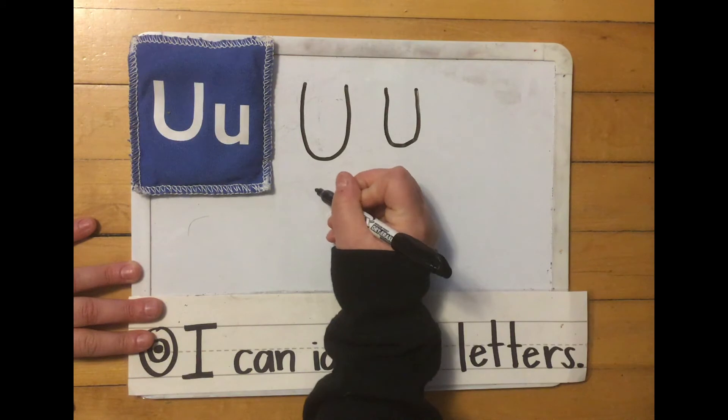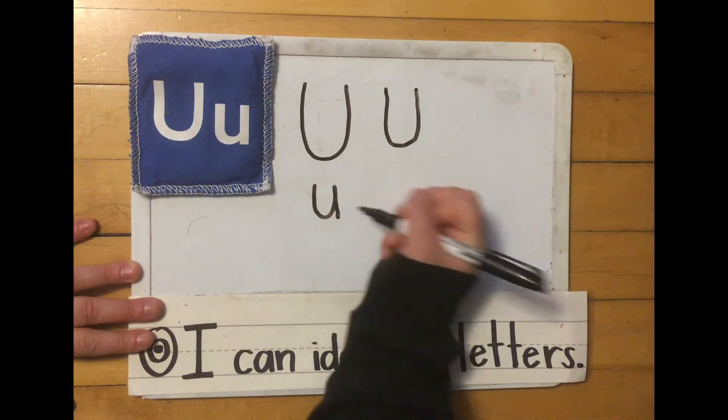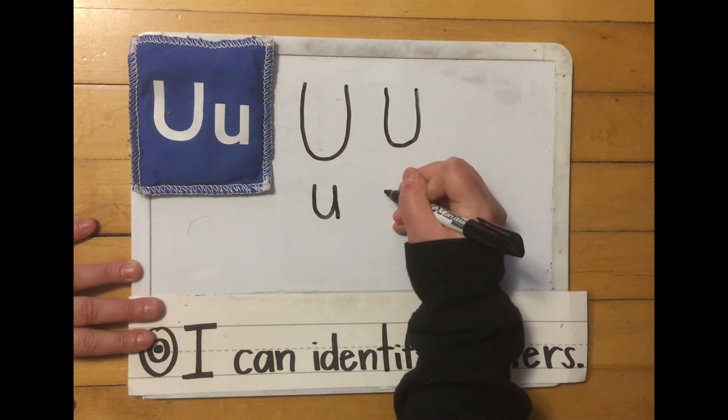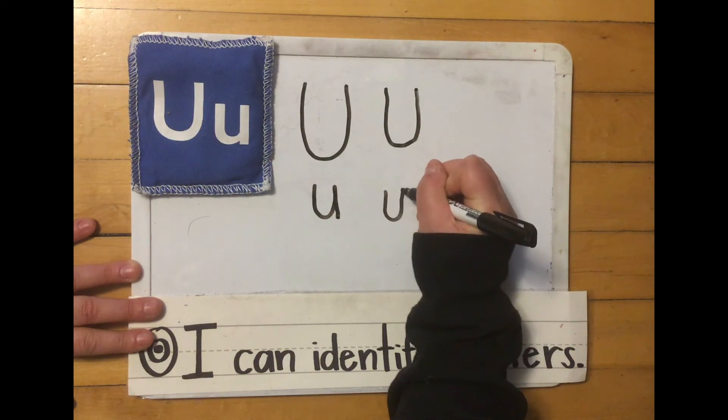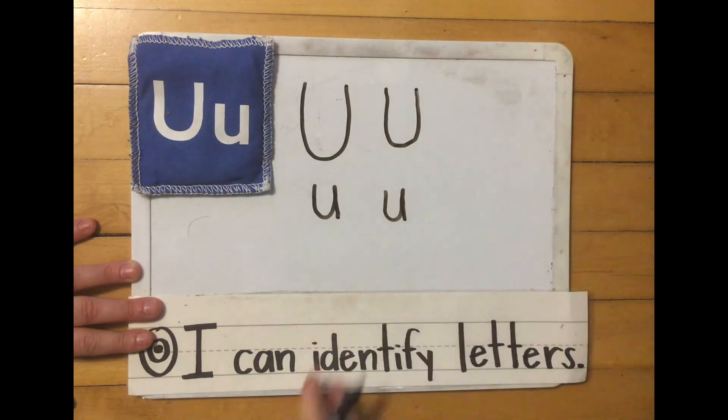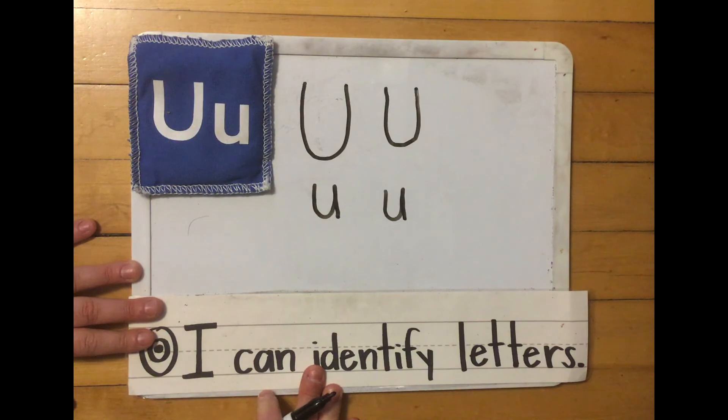Lowercase U looks similar. You're going to start in the middle, pull down, curve down, curve up, pull down straight. Start in the middle, pull down, curve down, pull up, pull down straight. This is the lowercase U.